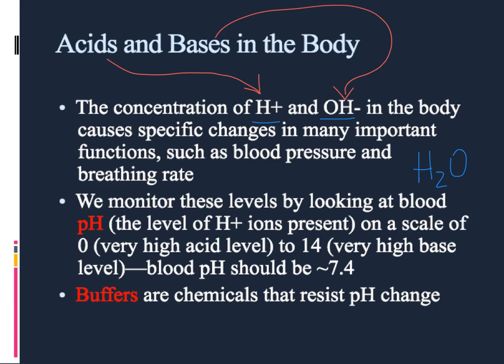We measure that level on a scale called the pH scale, which runs from 0 to 14. Numbers at the low end — 0, 1, 2, 3 — tend to be chemicals that are acids, and those at the high end — 11, 12, 13, 14 — tend to be basic chemicals, or bases.